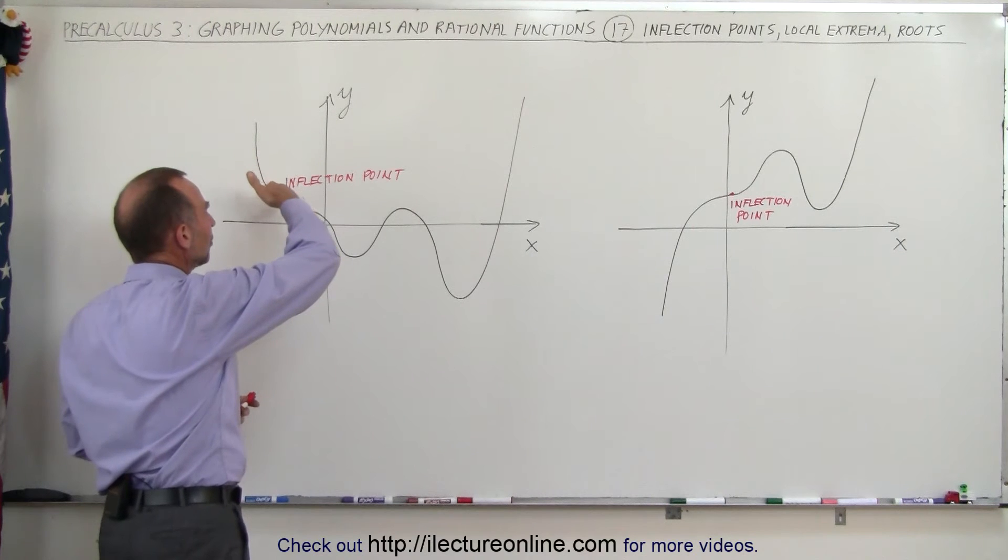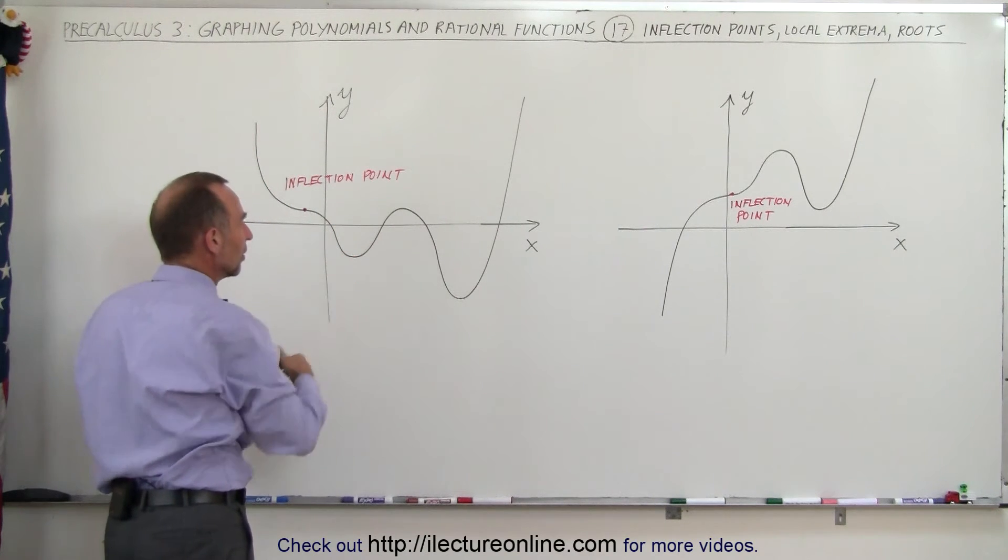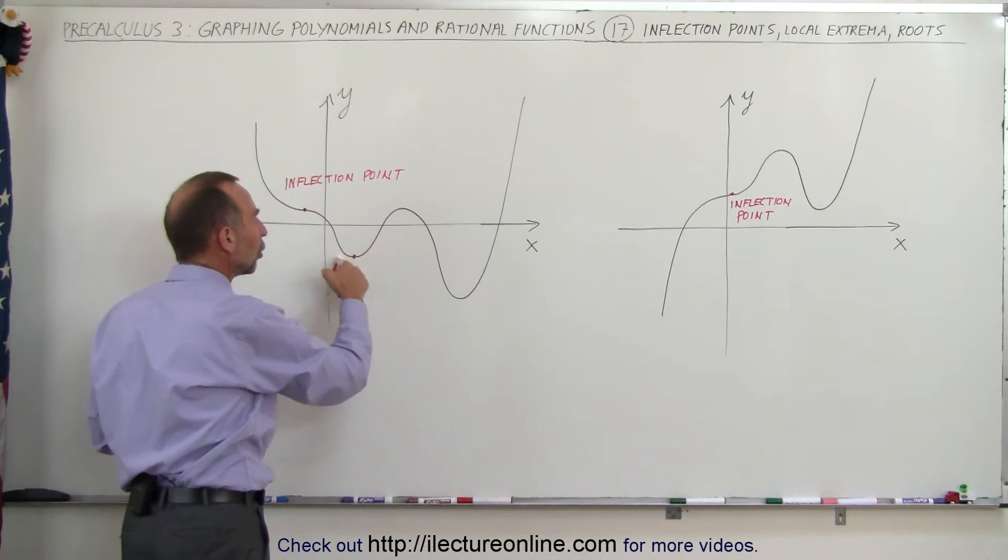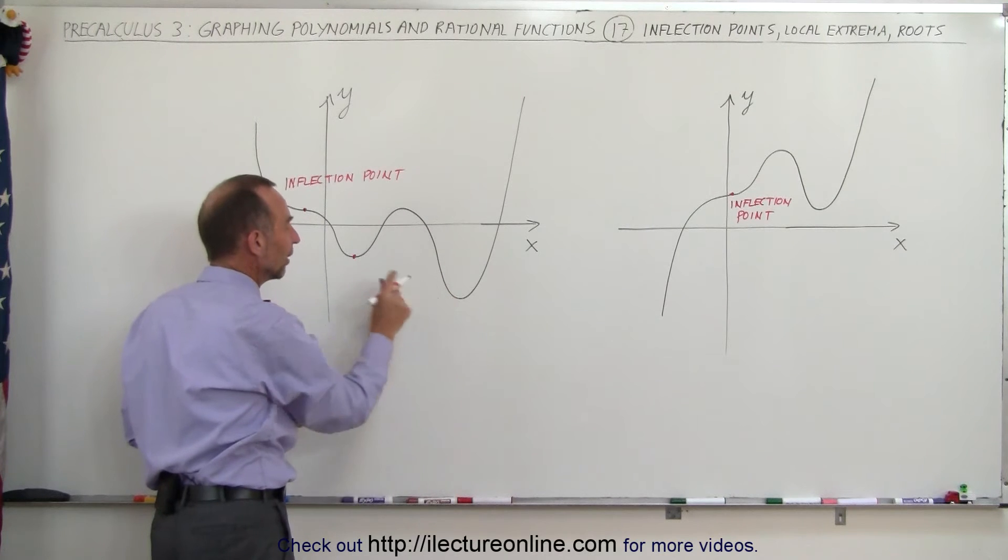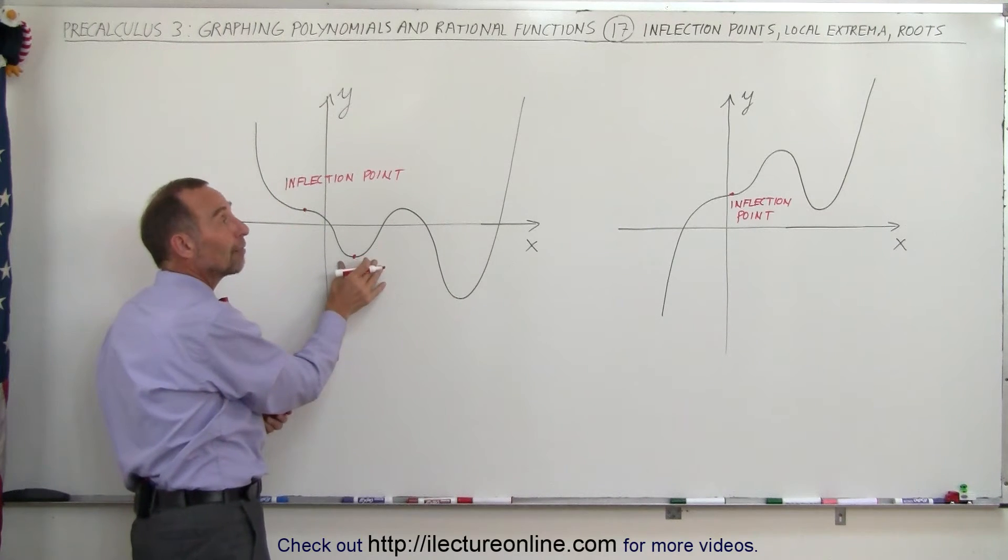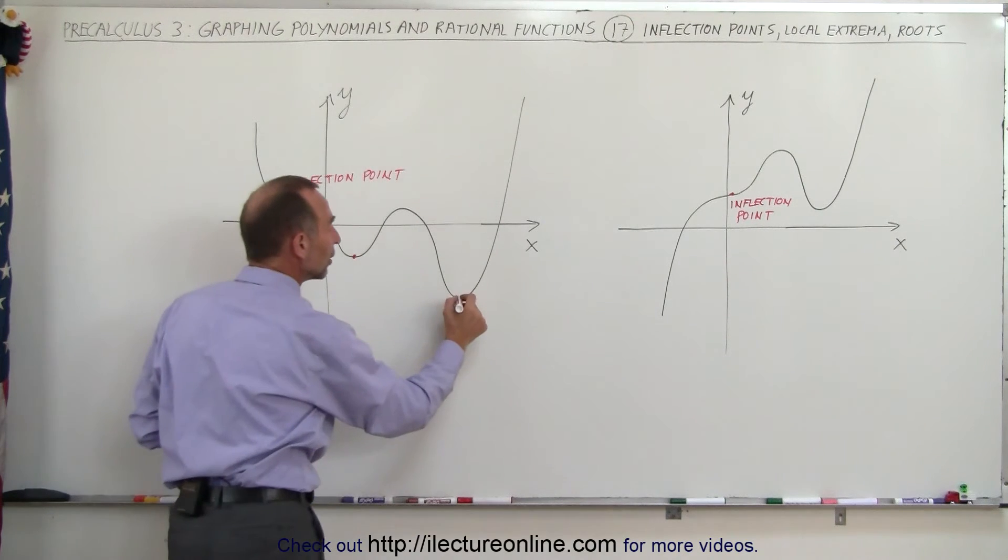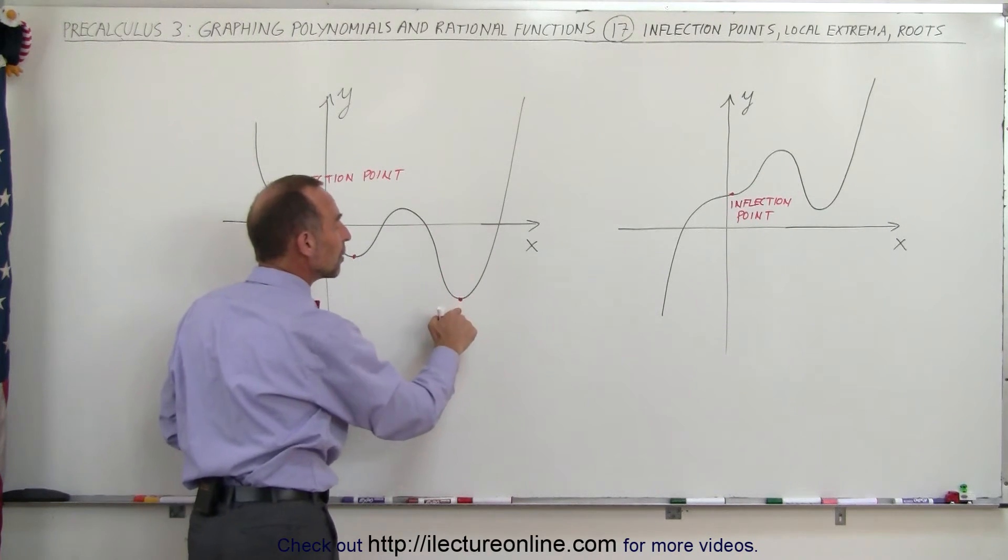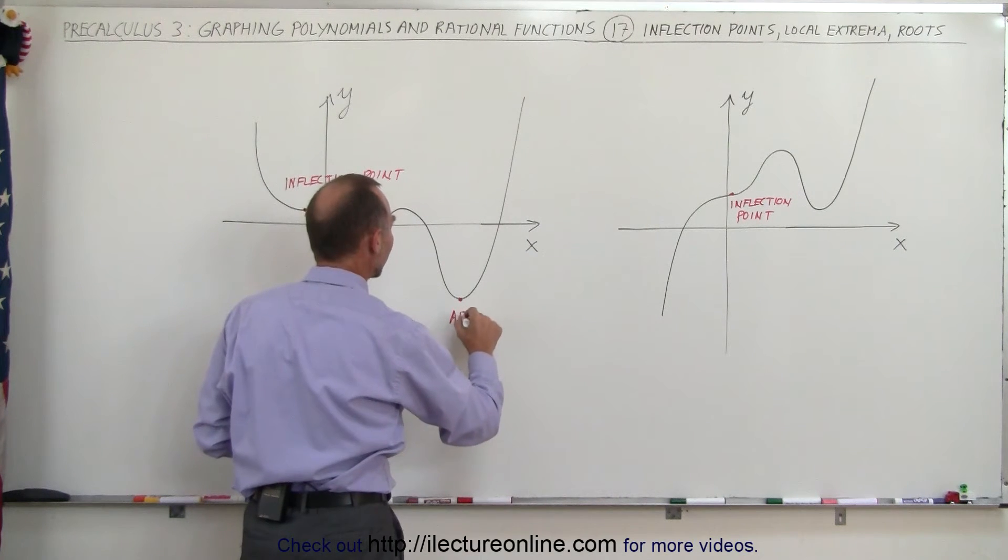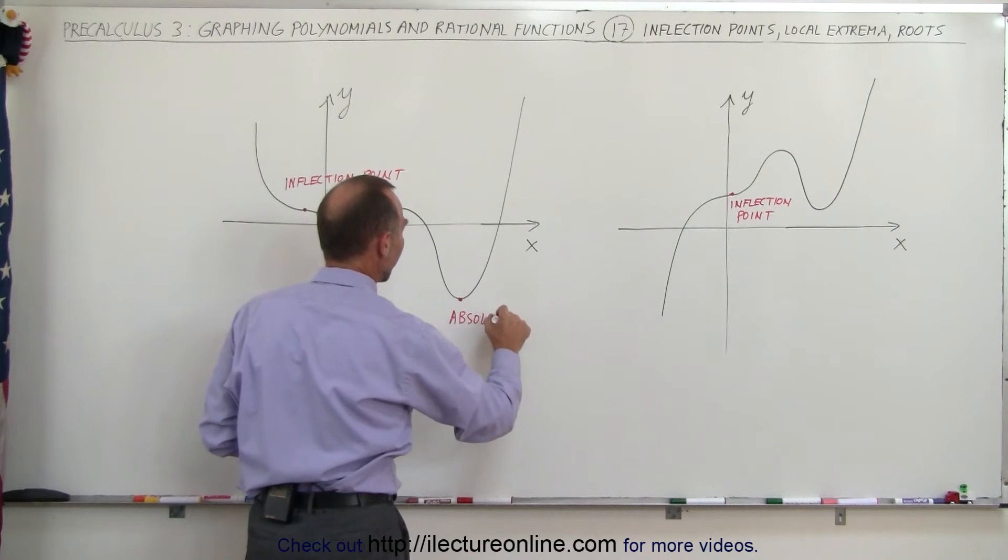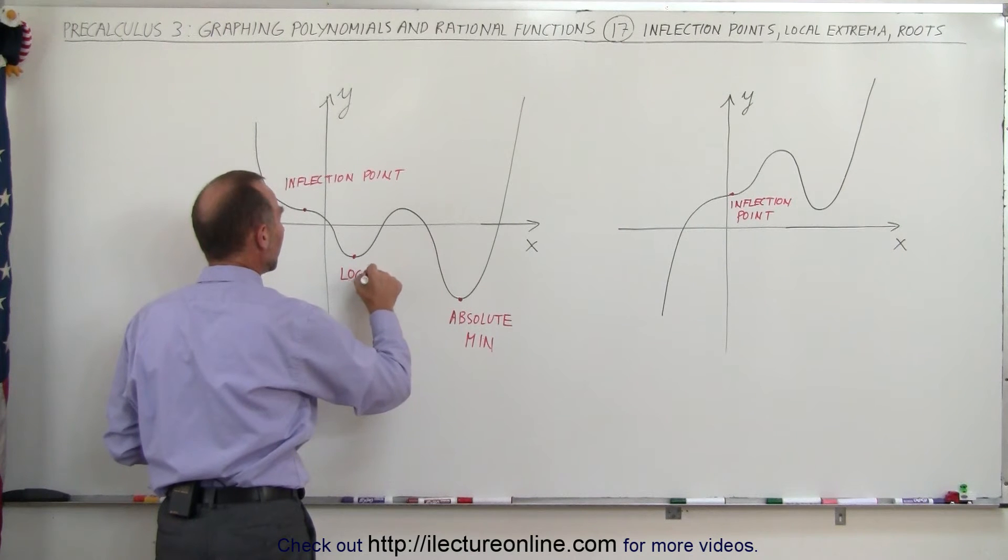So here we come down, we have an inflection point, then it continues on down, we reach a lowest point. This would be called an extrema or a local extrema, because notice that over here it goes down even further. This is not the lowest point of the graph, so this is a local minimum but not an absolute minimum. This here is what we call an absolute minimum. This is the lowest point on the entire graph, so this is the lowest point we call that the absolute minimum.